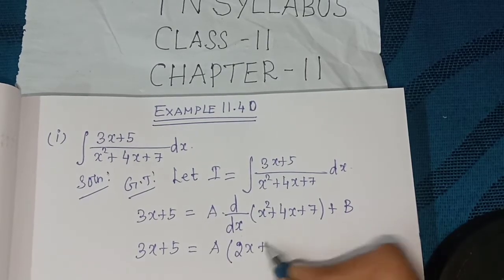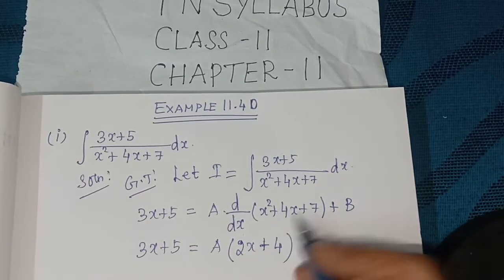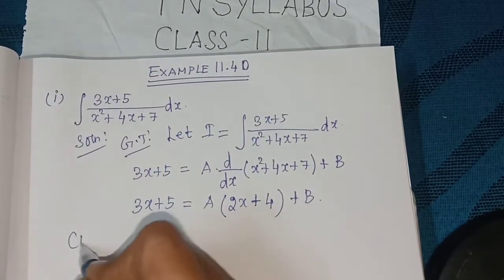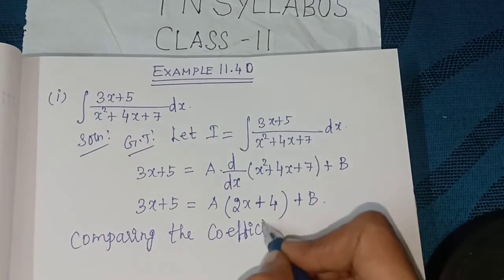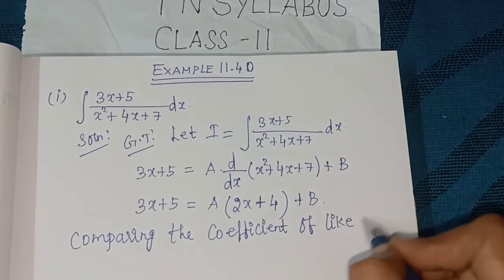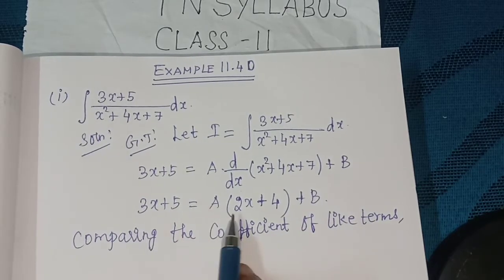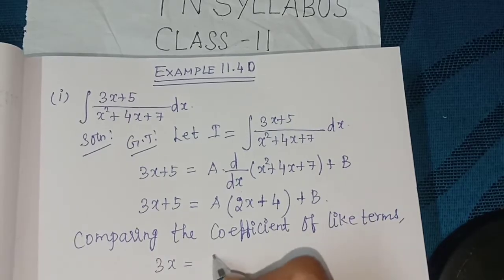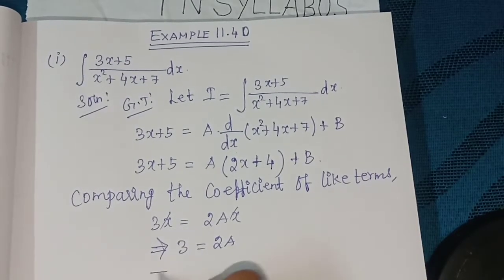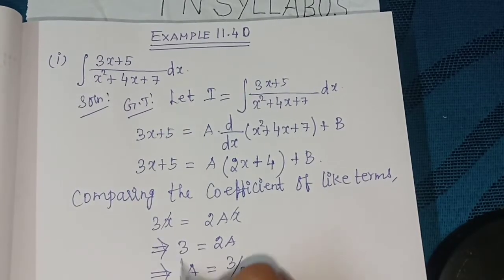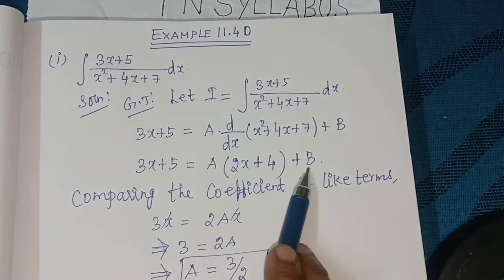x² differentiated gives 2x, 4x differentiated gives plus 4, constant differentiated is 0, plus B. So comparing the coefficient of like terms: coefficient of x, 3x equals 2ax, x cancels, so 3 equals 2A, implies A equals 3/2.